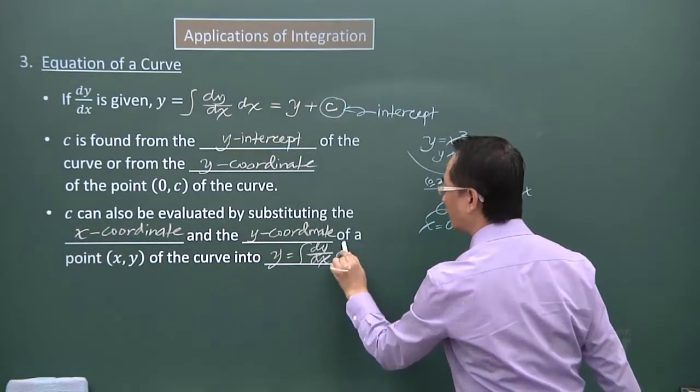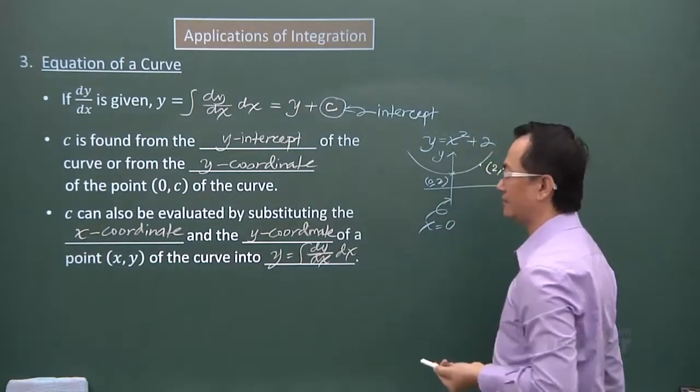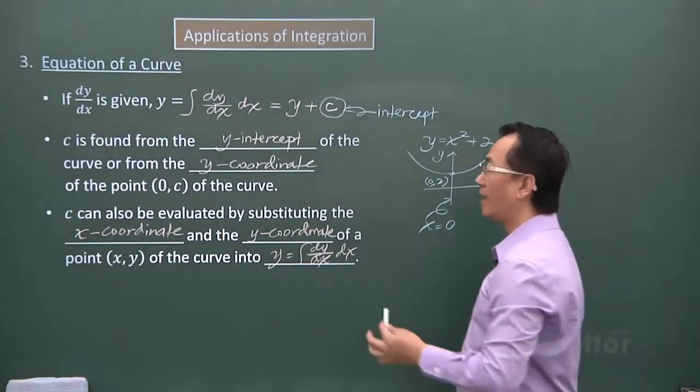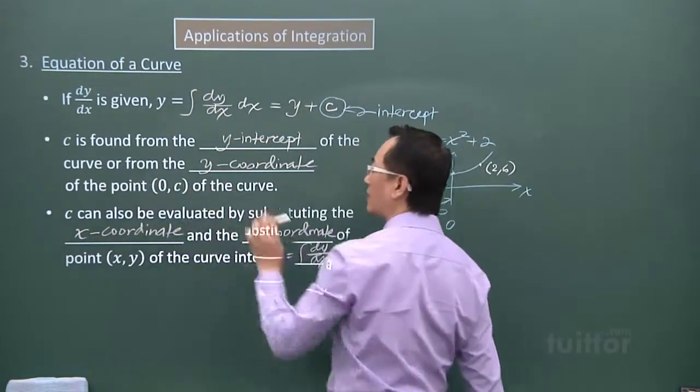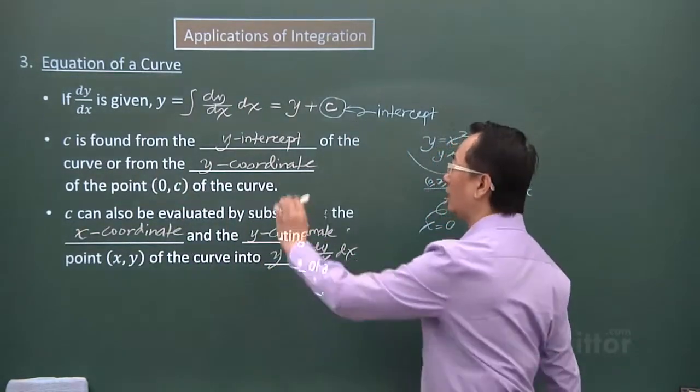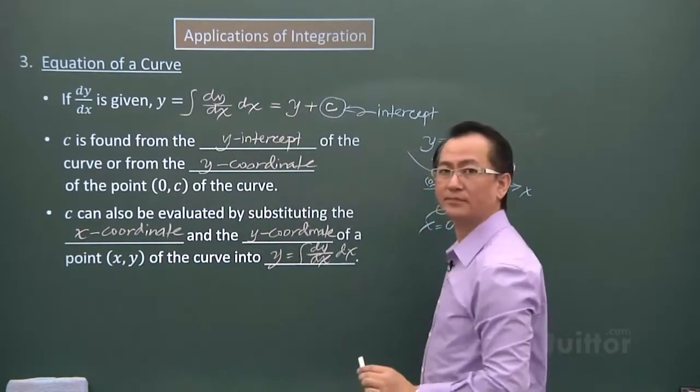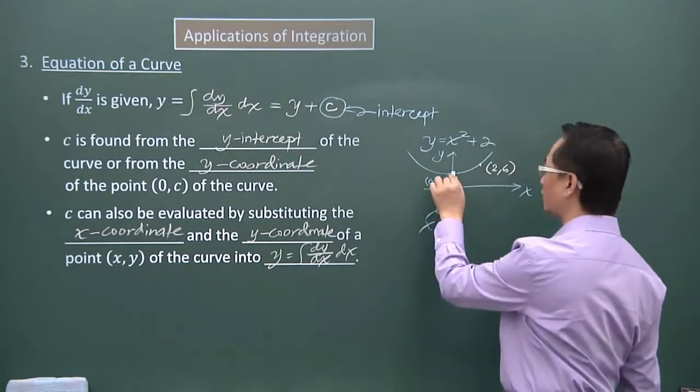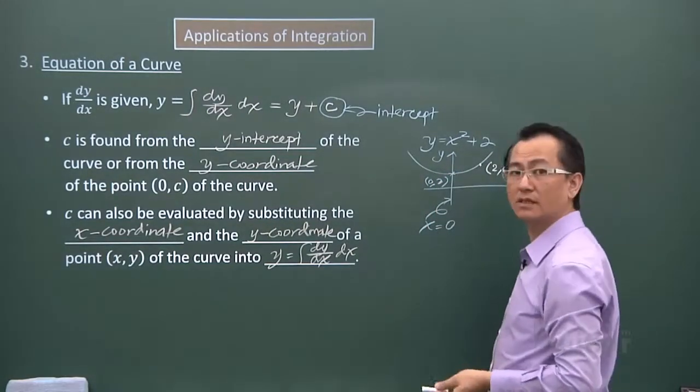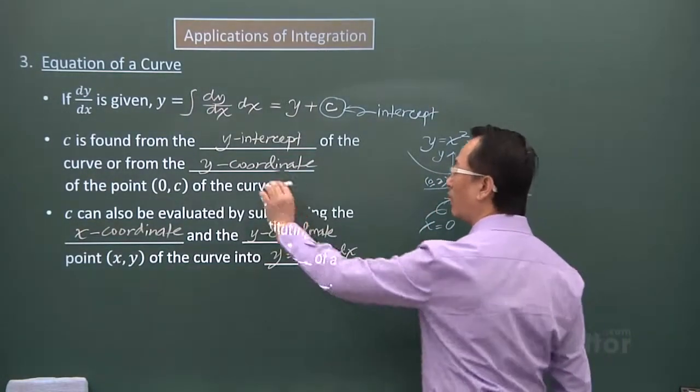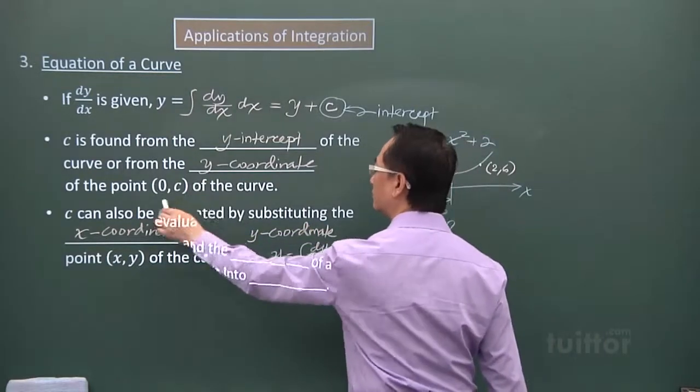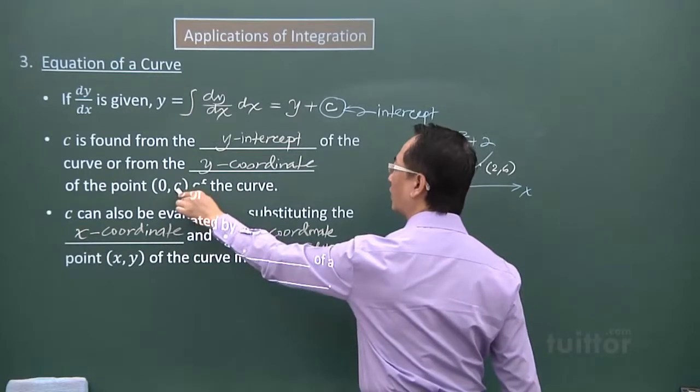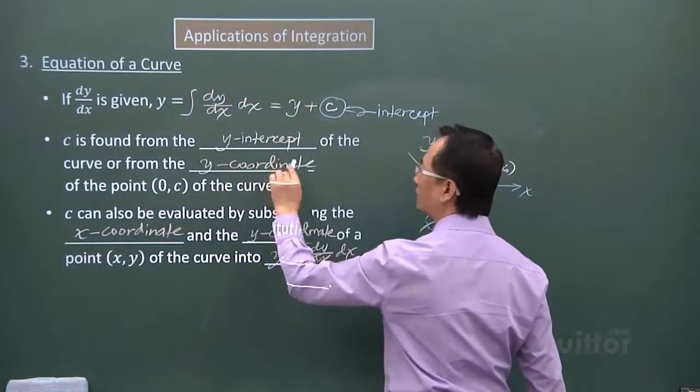So basically, we can find the value of c in three ways. One, looking at the y-intercept. It can be from a curve, like this, showing where the intercept is. Or, the point is already given to you, 0 comma c. So you just pick the y-coordinate to be the value of c.